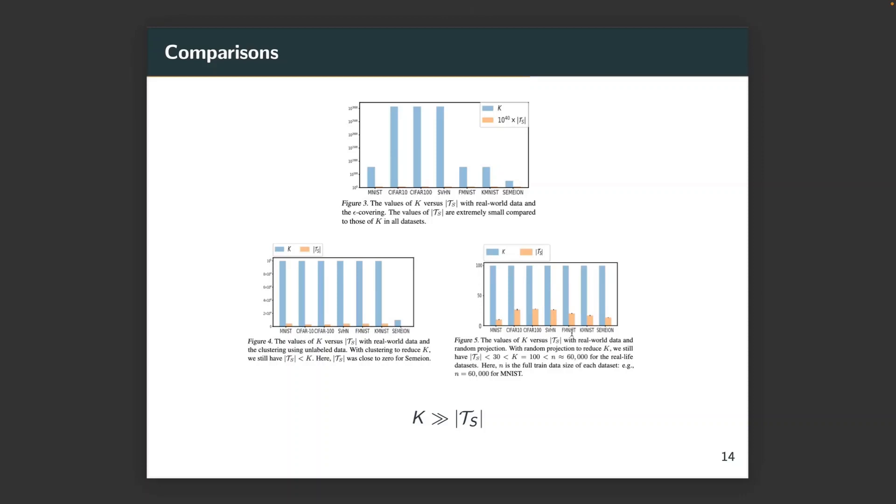For straightforward visualization, we consider the following scenarios. Figure 3 shows the values of K versus the cardinality of |T_s| for the real world data set with partition C_K being the epsilon covering of the input space. All the training data points of each data set were used. As we can see, we have the cardinality of |T_s| much smaller than K for real world data.